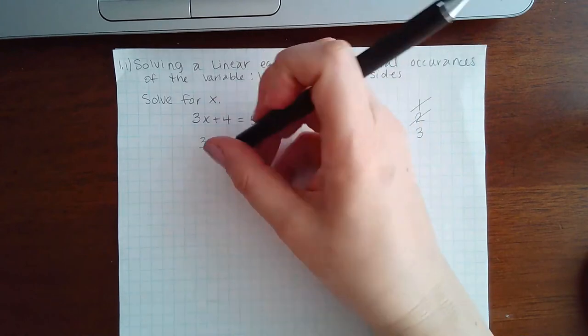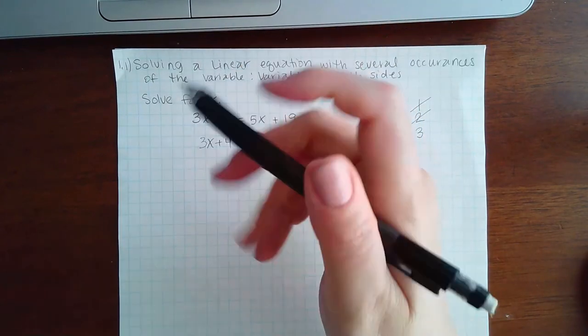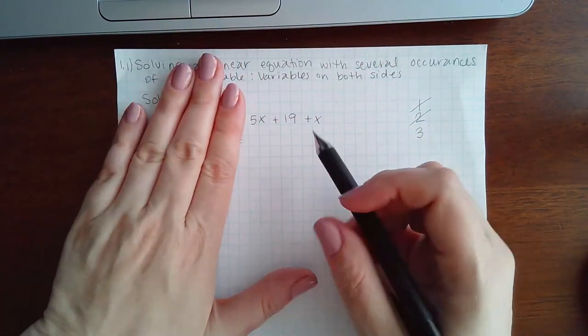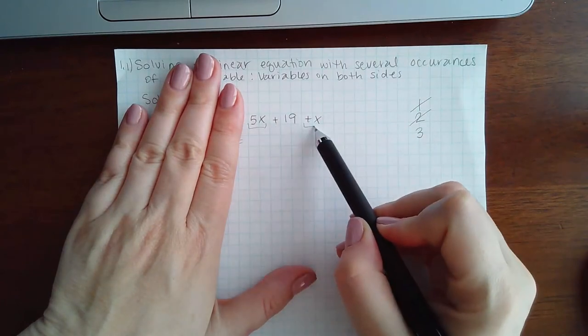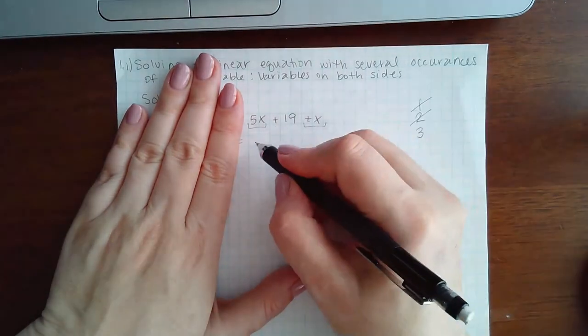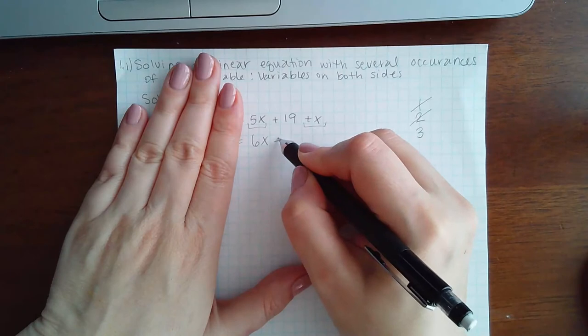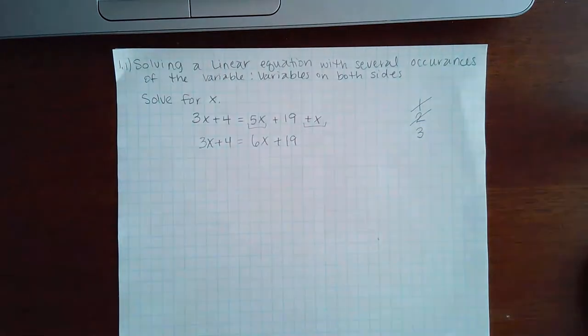On the right hand side though, I do have like terms. I have 5x plus x. And when I combine those, I get 6x. And the plus 19 comes down.